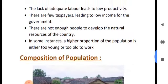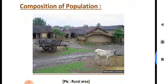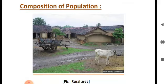Now, the composition of population. Composition of population is divided into two parts: rural population and urban population. Rural population refers to people living in villages, and urban population refers to people living in towns and cities. They differ from each other in various aspects.